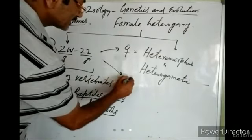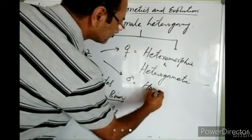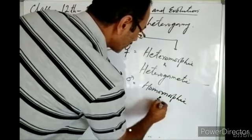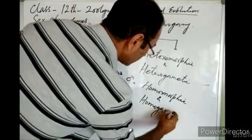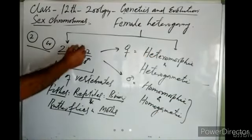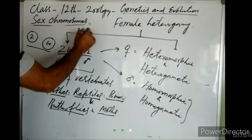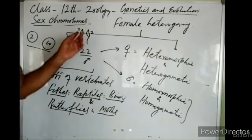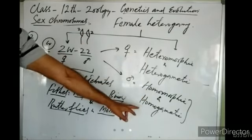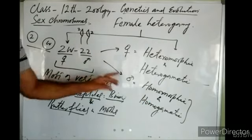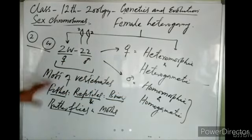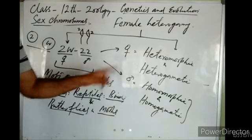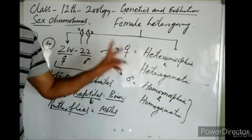In the ZW/ZZ condition, males are homomorphic and homogametic for sex chromosomes. When meiosis occurs, the male forms sperm and all sperm have Z as their sex chromosome — only one type of sperm is produced. So in this condition females are heteromorphic and heterogametic, while males are homomorphic and homogametic.